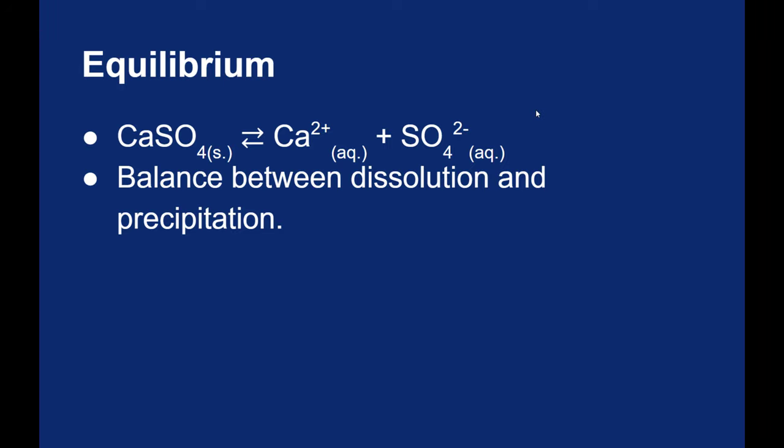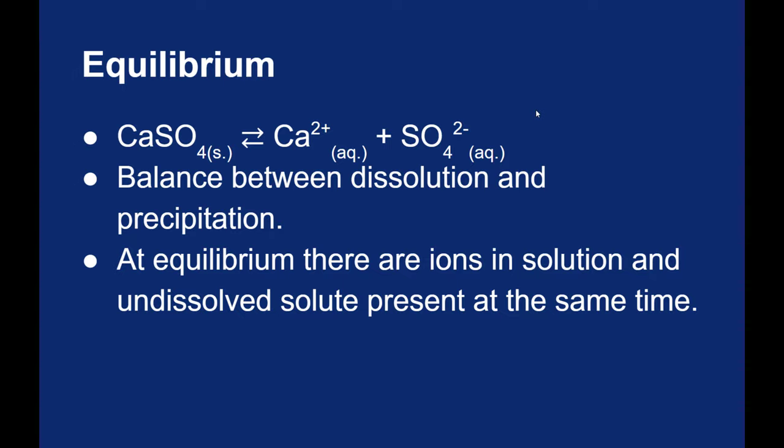Equilibrium occurs when you have both the reactants and the products present at the same time. In other words, you have undissolved solute and aqueous ions at the same time.